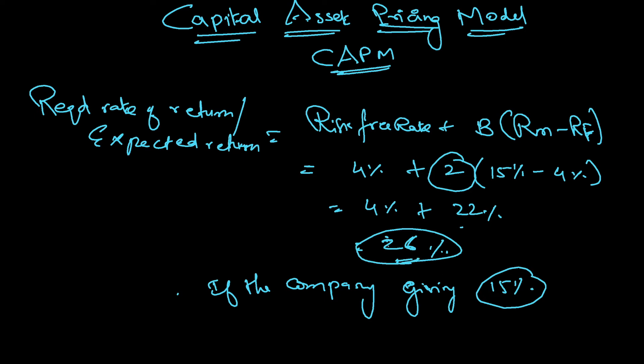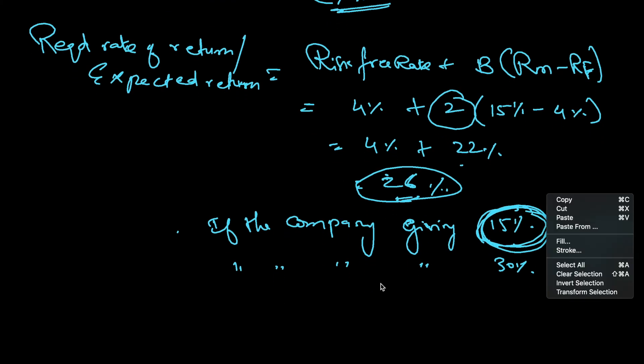You should sell. Whereas if the company is giving, let's say, 30 percentage, so your expected return is 26, whereas the company is giving 30 percentage, you should buy. It is giving more than what you are expecting from the company.